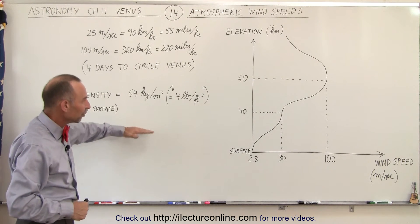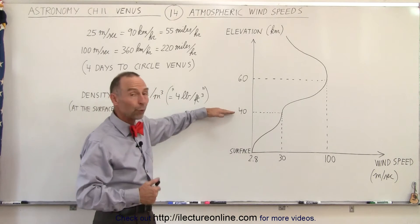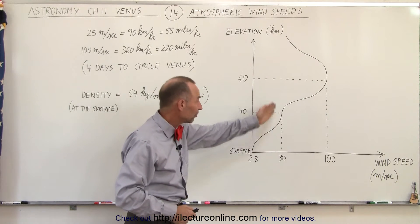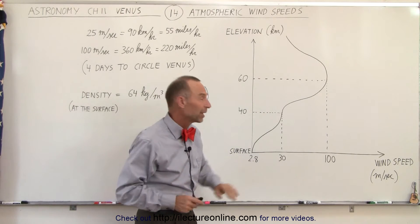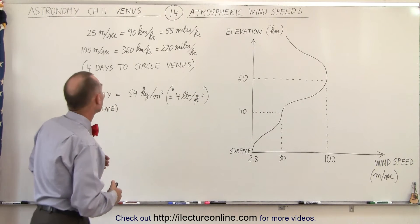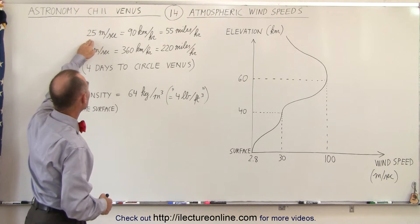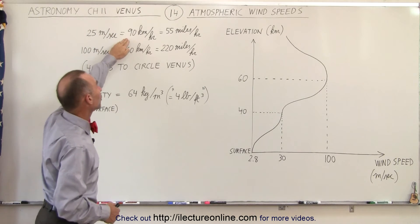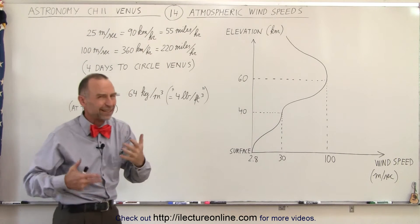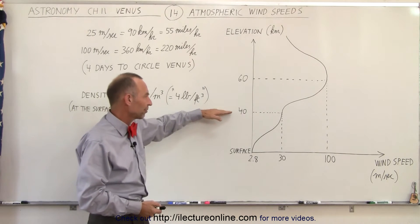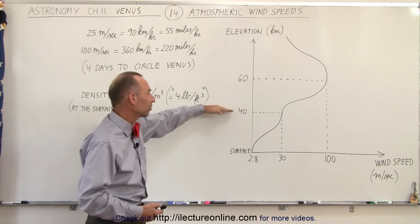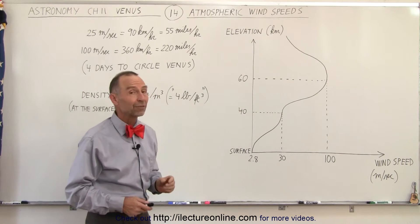But as we go higher up into the atmosphere, when we reach a height of about 40 kilometers, there's a region there where the wind seems to be moving at about 30 meters per second. Now to give you kind of a feel, here 25 meters per second is equivalent to 90 kilometers per hour or 55 miles per hour - that's kind of like freeway speed for cars. So by the time you reach an elevation of about 40 kilometers, which is 25 miles up above the surface, winds are moving quite fast.